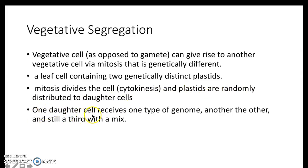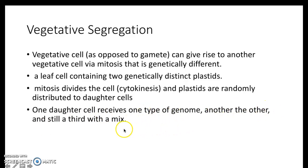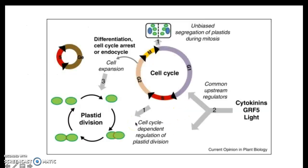Now you have two cells with two different genomes in their plastids. The cells themselves are identical, but the plastids within them can still be distinct genomes — pretty crazy to think about. Mitosis divides the cell via cytokinesis right after mitosis, and the plastids are randomly distributed to daughter cells. One daughter cell receives one type of genome, another receives the other type, or it's even possible to get a mix. You kind of have to breed for one genome or the other, but no one can see an albino plastid surviving very long.